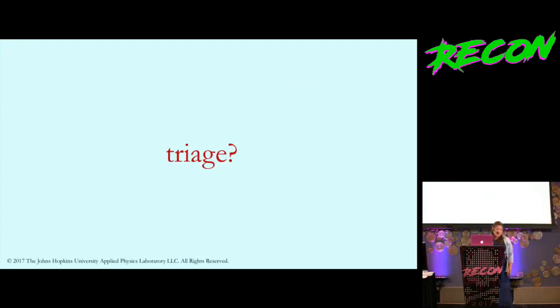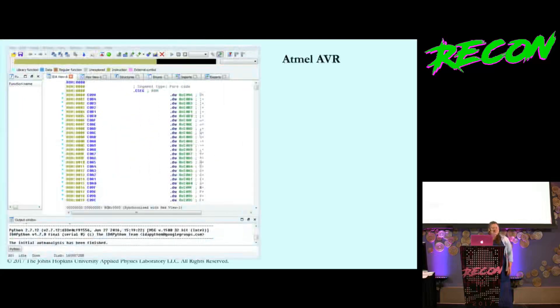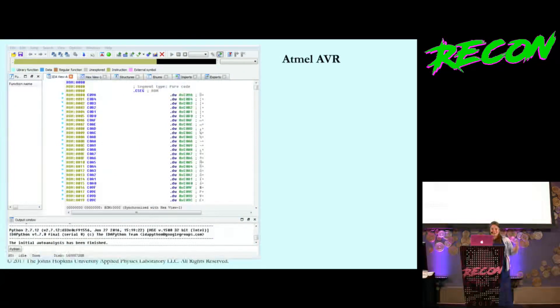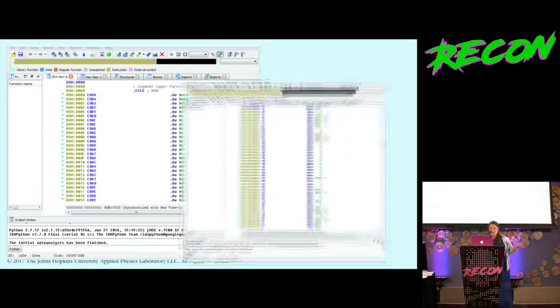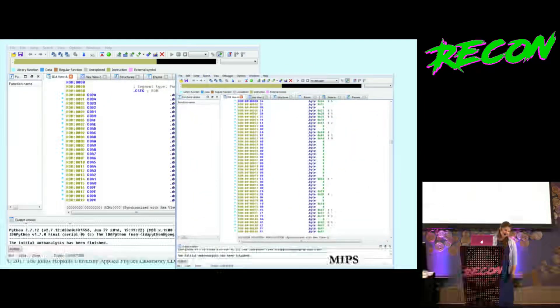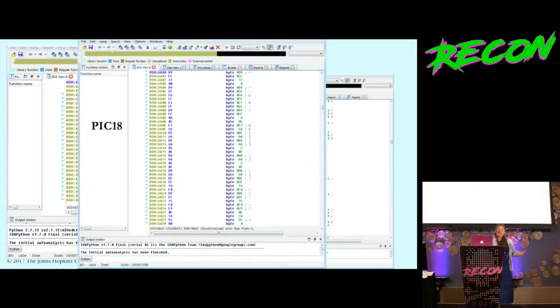What do I mean by triage? If you've been looking at firmware binaries, you've probably come across this. IDA finishes its auto-analysis and it doesn't know anything. That's an AVR firmware image. Same thing with MIPS. Let's try again with the PIC 18.